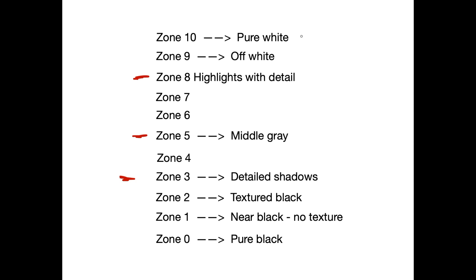I just want to quickly touch on zone ten. Specular highlights are at zone ten — like glistening water, those bright white glistens on the water, or reflections from chrome or mirrors. They're all up in zone ten. They don't have any detail in them so we don't worry about those at all.